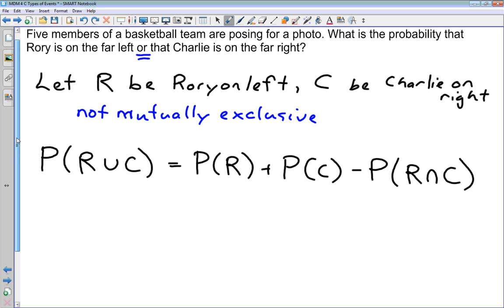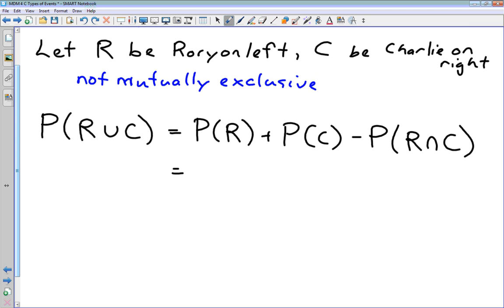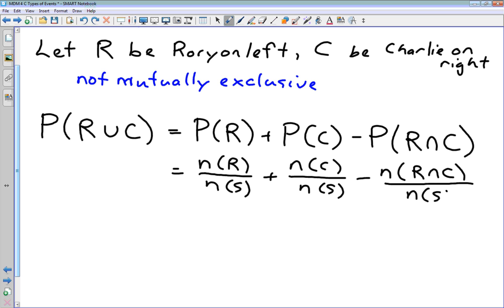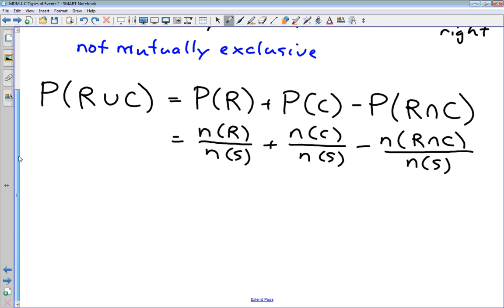And we're going to use our standard formula for probability here. We're going to use the number of elements divided by, in each set, divided by the number of elements in our, number of outcomes in our sample space. So n(R) divided by n(S) plus n(C) divided by n(S) minus the number of events in R and C divided by n(S).